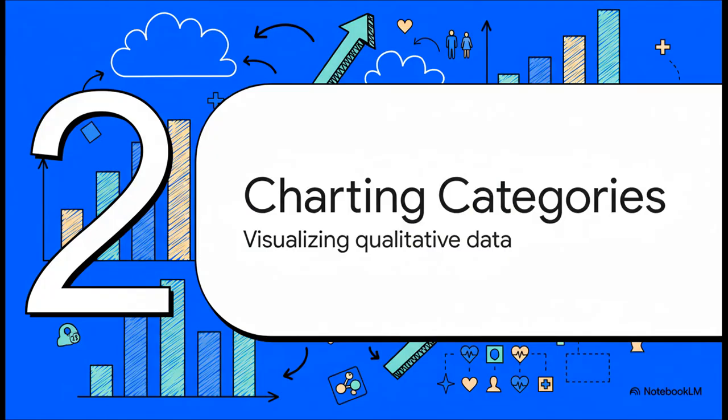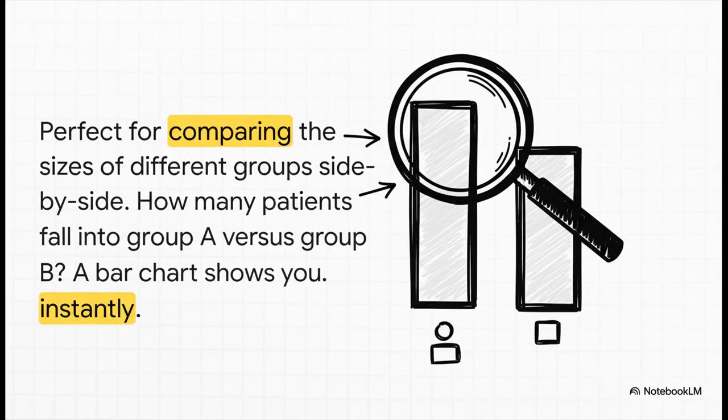Let's start with the tools for your categorical data. So when your data is all about groups or types, like normal delivery versus cesarean, these are the charts you're going to want to reach for. First up, the trusty bar chart. Think of the bar chart as your go-to tool for a quick and clear comparison. Its job is simple, to show you at a glance which group is bigger.